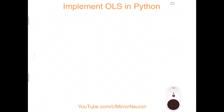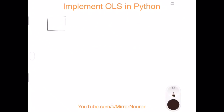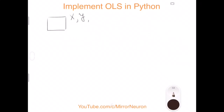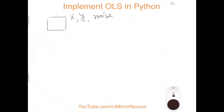To demonstrate this project, we'll first generate a dataset — X for features and y for the output. We'll also add noise, because in real-world projects we can't capture every factor explaining the data, so there will always be some noise.